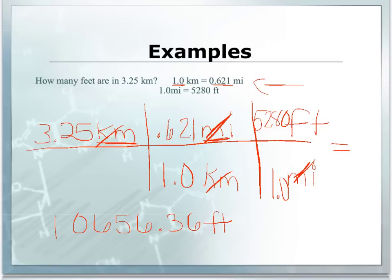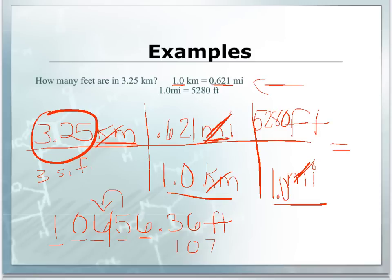But remember, we need to look at our number of sig figs. We will not use our conversions. So we're going to use the numbers here, which will be 3.25. That's three sig figs. We need three sig figs here. Remember, the five will round the six up. This will be 107, and because there's two places left before the decimal place, we need to add zeros there. So our correct answer will be 10,700 feet in 3.25 kilometers. We need to keep track of our sig figs because we're using measurements here.